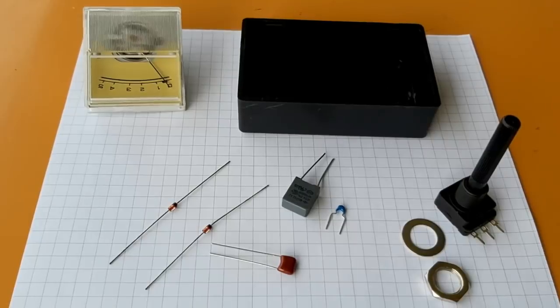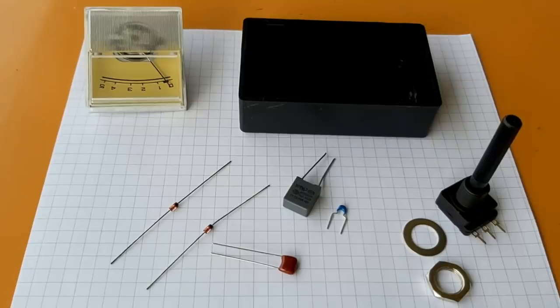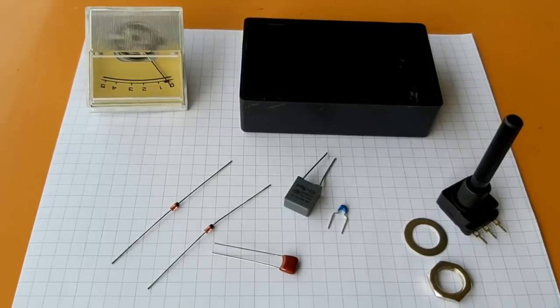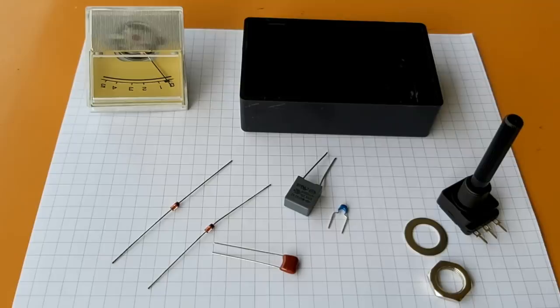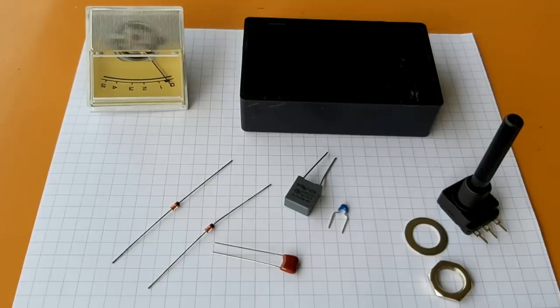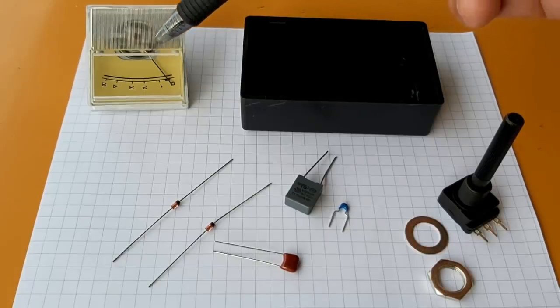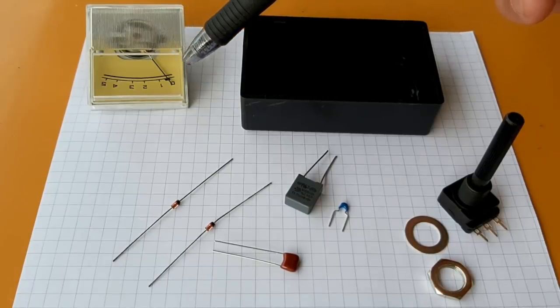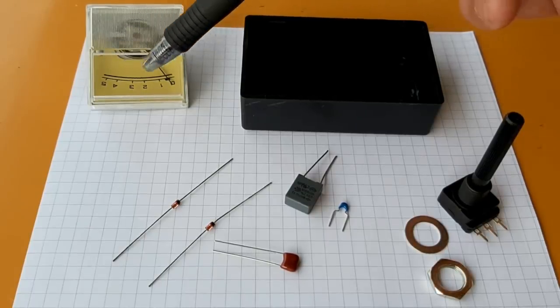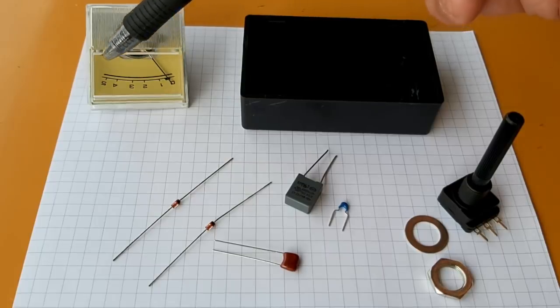And this device doesn't even require a battery. It will simply take the RF current coming from a little piece of wire or an antenna, a short antenna, rectify it and send the current to the meter here, which will allow us to see the strength of the electric field of the antenna.